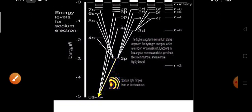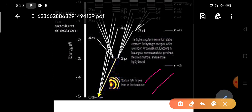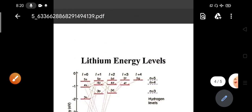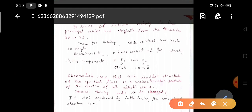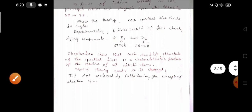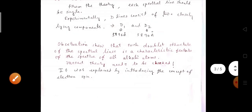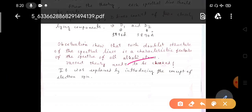But from a spectroscopic observation, we get that the D line is not one line, it is consisting of two components. One is D1, another is D2. Why is it so? That was an open question for the scientist. The D1 spectral line, D1 value is 5897 Armstrong and D2 is 5890 Armstrong. Observations show that such double structure of the spectral lines is a characteristic feature of the spectra of all alkali atoms. And so, present theory need to be checked.